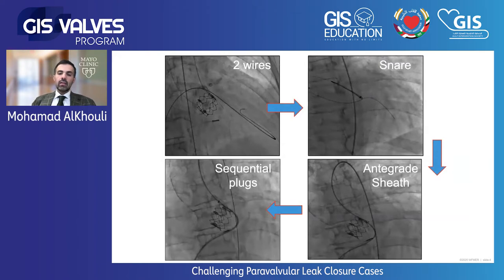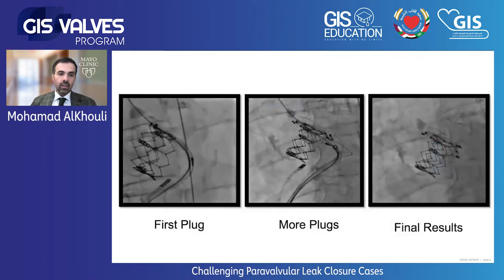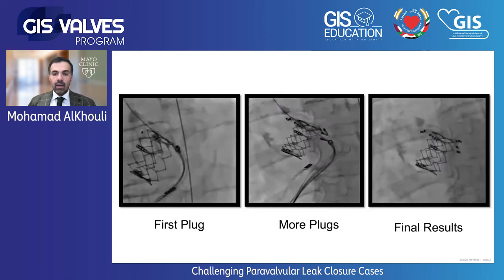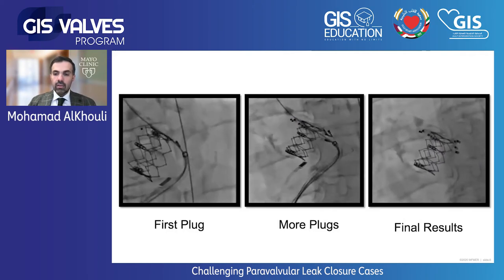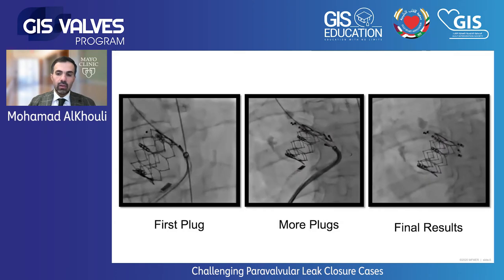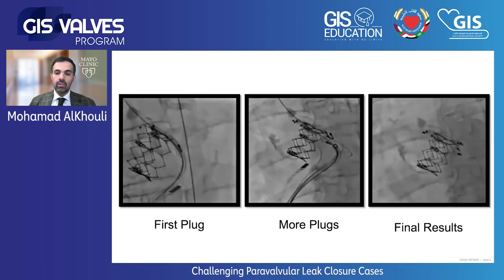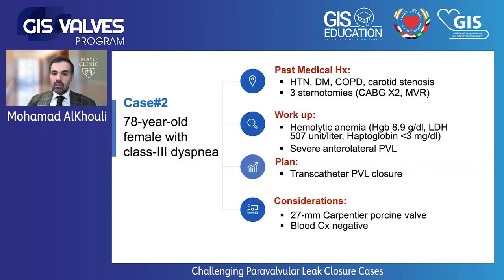We were able to send our plug deployment sheath through the atrial septal defect into the aorta without difficulty using this rail. We created an AV rail using the venous access that goes through the atrial septal defect, through the leak, around the aortic valve. Through that approach, we deposited our plugs back to back using a sequential deployment technique. We were able to put three AVP2 plugs that almost completely resolved the leak. The patient has done well with follow-up up to three years.